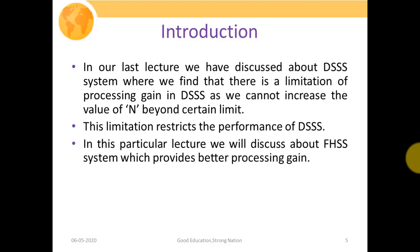In our last lecture on DSSS, we found a limitation of processing gain: we cannot increase N — the number of bits in the chipping code — beyond a certain limit due to pulse width limitations. Since processing gain equals expanded signal bandwidth divided by original signal bandwidth, and bandwidth depends on N, this restricts the performance of DSSS. FHSS provides a better processing gain.